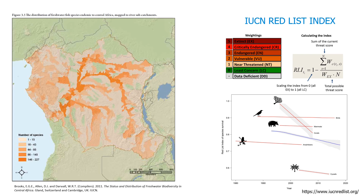Of course, instead of doing this for all the species in a particular taxonomic group, you could do it for a representative section of species across multiple groups for a specific catchment. You will apply data to the Red List Index in the hands-on activities.